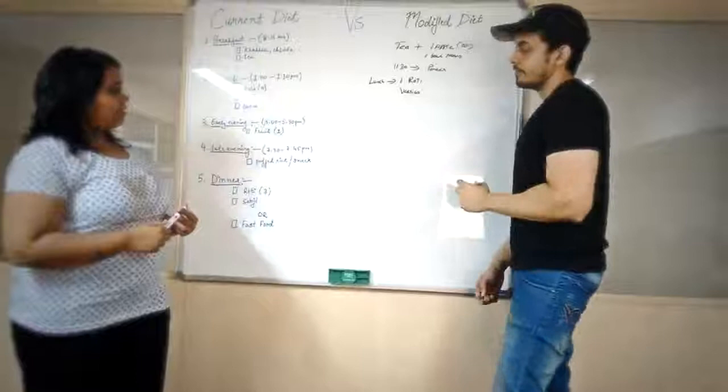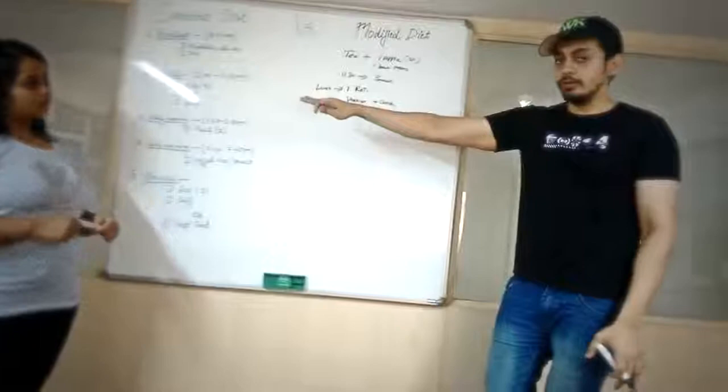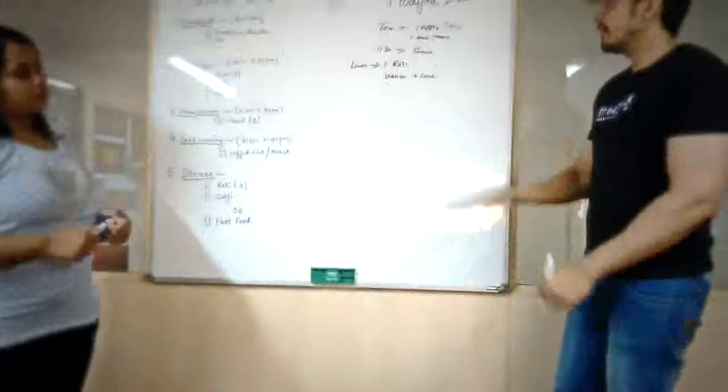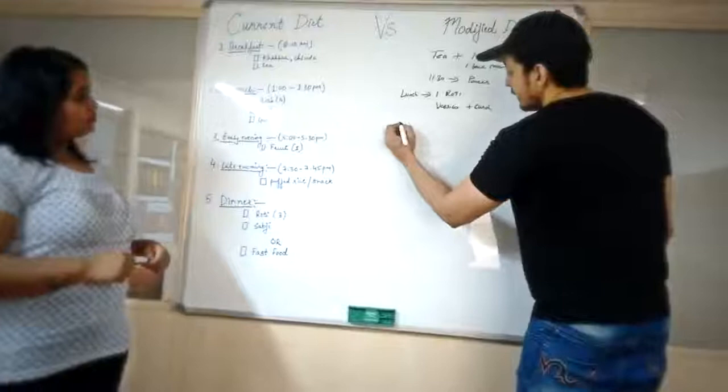And for lunch, you give me one roti, lots of sabzi, and curd. So we cut her rotis from four to one. I asked her to increase her quantity of vegetables and we also added some curd which she was already having. We have some proteins, we have a little bit of carbs, and we have a lot of vegetables.